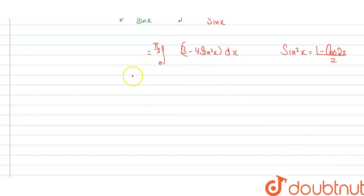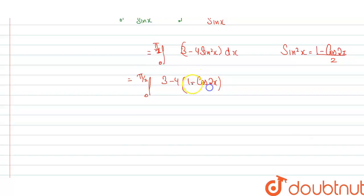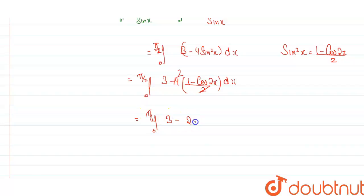We substitute sin²(x) = (1 - cos2x)/2 into the expression. So we get the integral from 0 to π/2 of [3 - 4 × (1 - cos2x)/2] dx. The 4 and 2 simplify, giving the integral of [3 - 2(1 - cos2x)] dx from 0 to π/2.